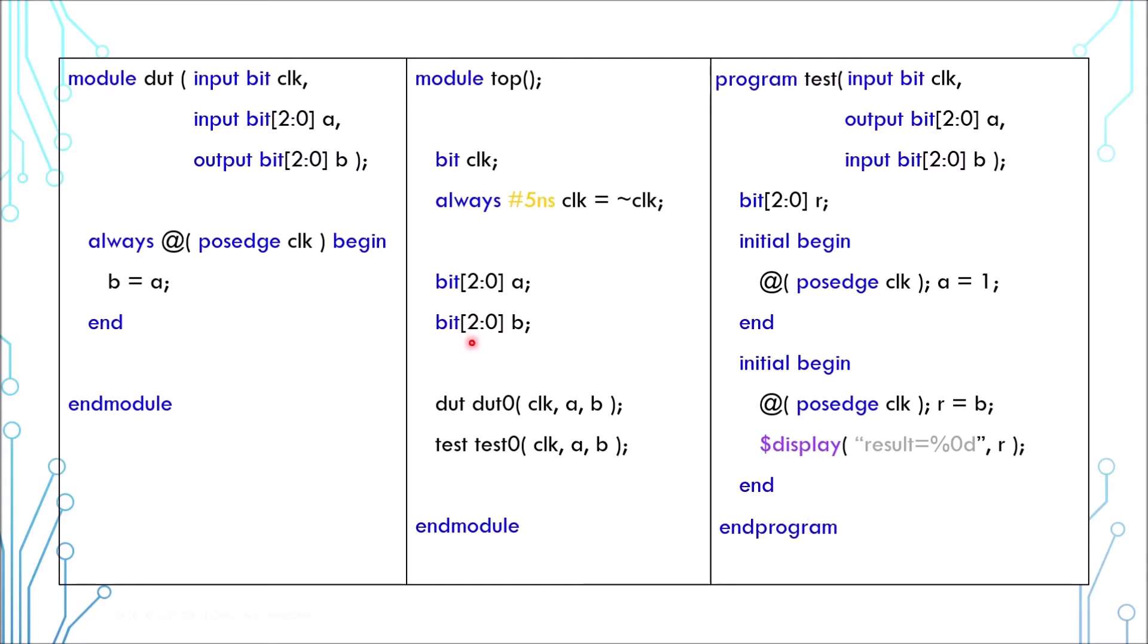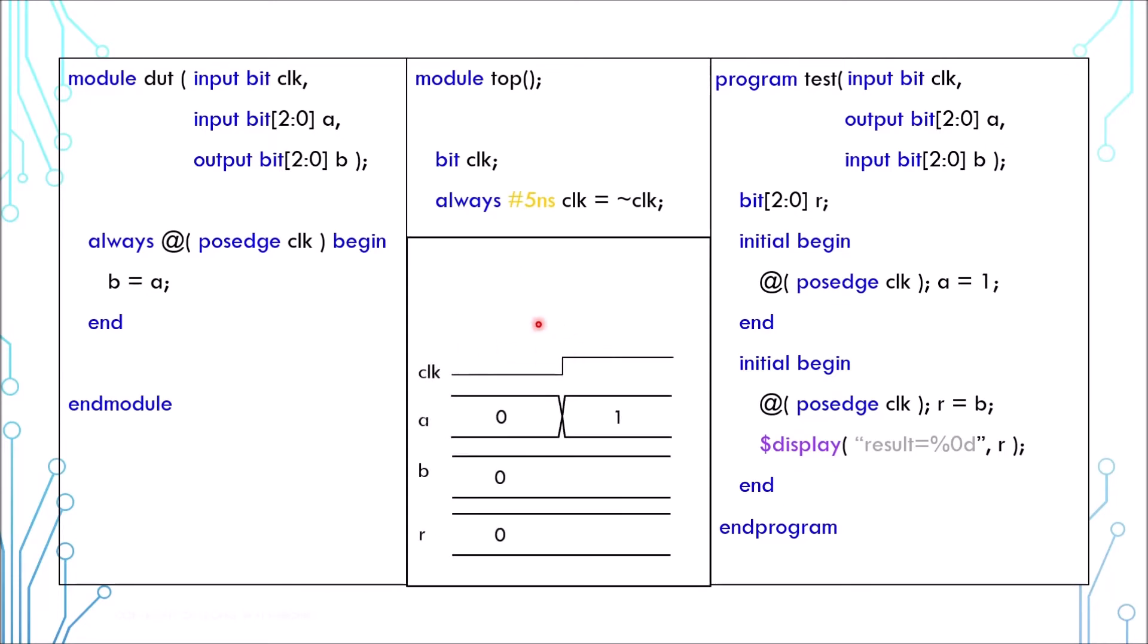To understand the behavior, we need to go about how simulator performs the assignment. The simulator will walk one time step at a time. Let's say the time step is 1 nanosecond. This is a simulation wave for the first 10 nanoseconds. Let's start at time 0. There is nothing to do here, so it moves to the next nanosecond. There is nothing to do here as well, so it moves to the next one until it arrives at the 5th nanosecond.